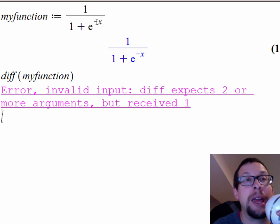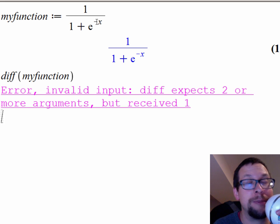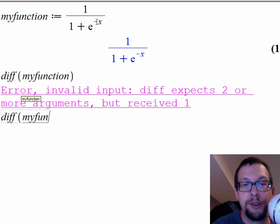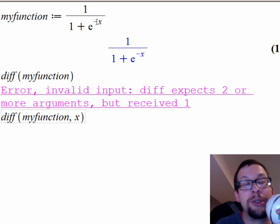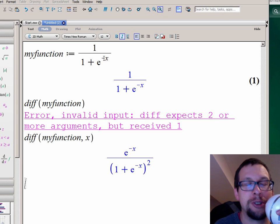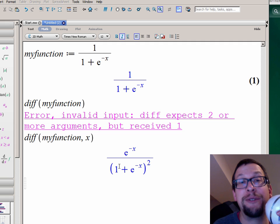Oh, I made a mistake. I need to say what the derivative of my_function is with respect to — you have to have a variable that it's with respect to. So I'm going to do that again. I'm going to say DIFF, my_function, comma, x. So I want to do the differentiation of the function my_function — which is 1 over 1 plus e to the negative x — with respect to the variable x. Now I hit enter, and there we go. That's what it should look like. So now I have these two functions: the original function and the differentiation — or the derivative — of the original function.